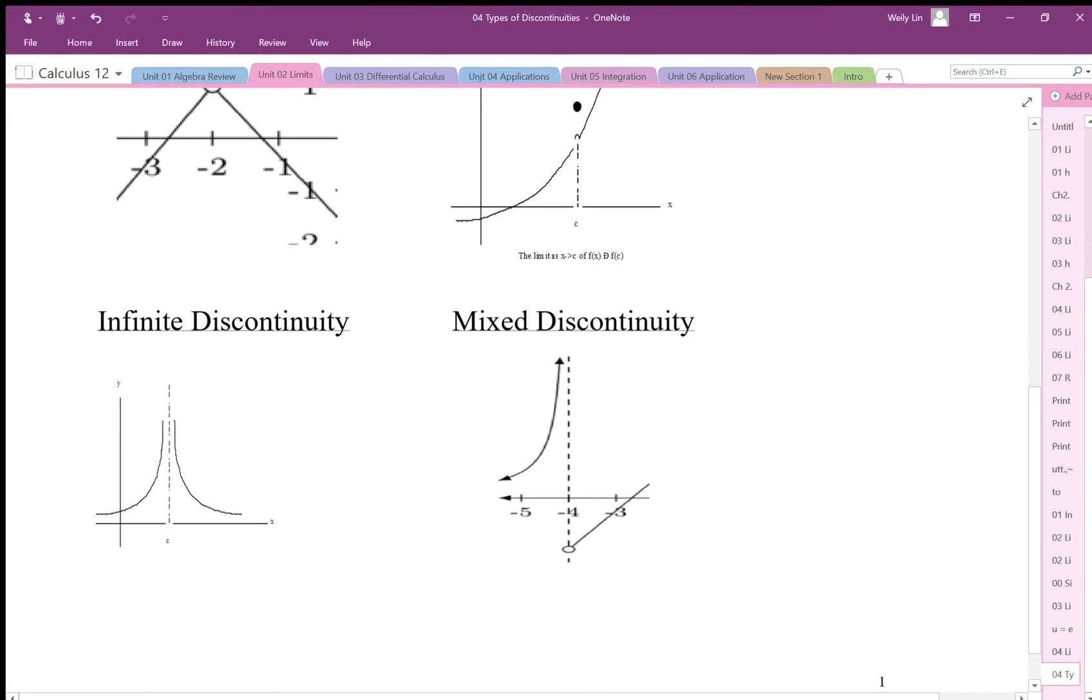So this is an infinite discontinuity. When we have a gap created by the asymptote, a vertical asymptote, okay, so this is called an infinite discontinuity. And then we also have these ones that we call mixed discontinuities.